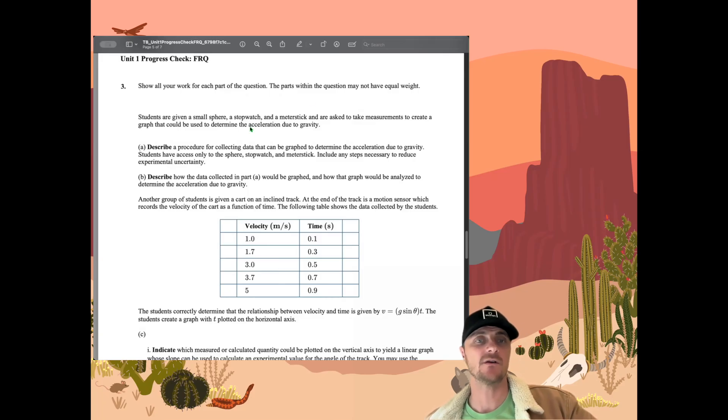So we've got a small sphere, a stopwatch, and a meter stick, and we're being asked to take measurements to create a graph so we can determine the acceleration due to gravity. Now we need to write a procedure that's going to tell us how to collect data, and then we're using that data to determine the acceleration of gravity. Importantly, very importantly, they want us to include any necessary steps to reduce experimental uncertainty. So I've already written a procedure. I want to show you what AP wants step by step. Let's go over to that page right now.